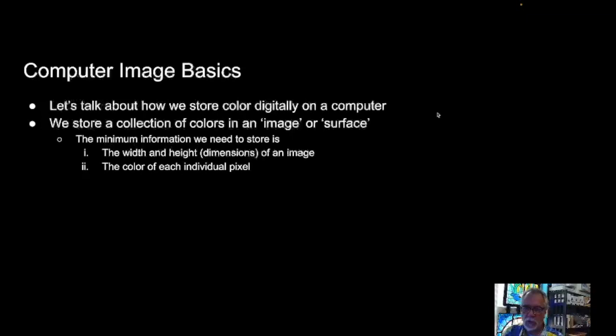How do we store color on a computer? We store it as an image or a surface. What we need to know is the size and the color of each individual pixel. A pixel stands for picture element, and a texel is a texture element, and a voxel is a volume element. You'll see those terms.